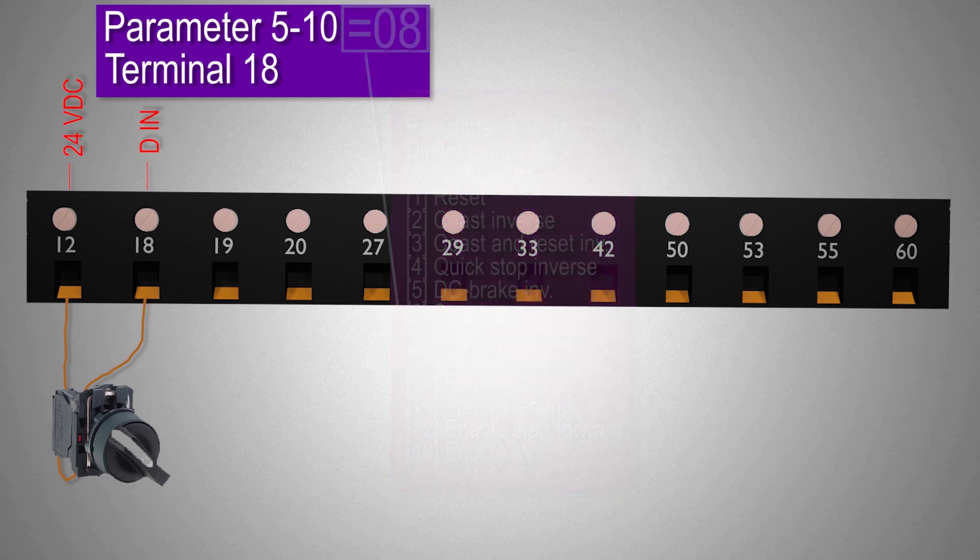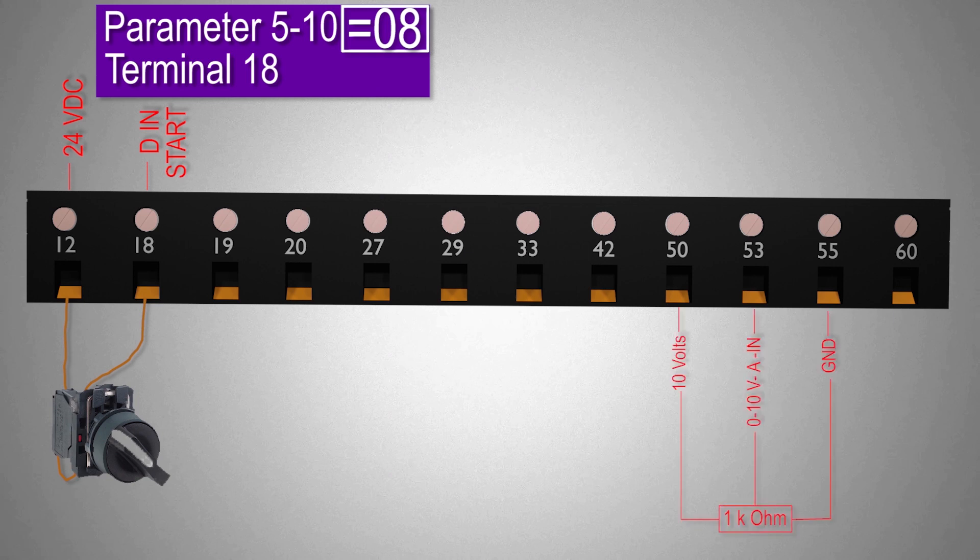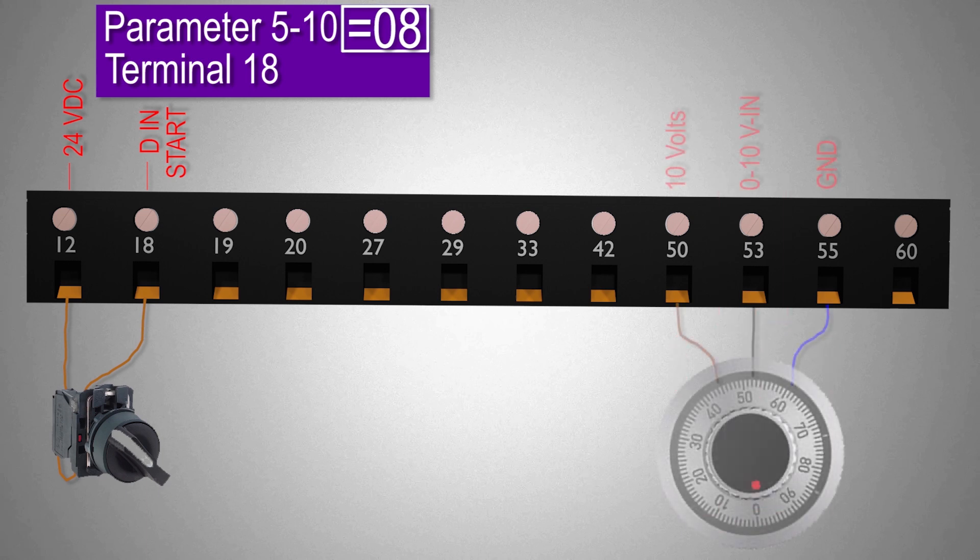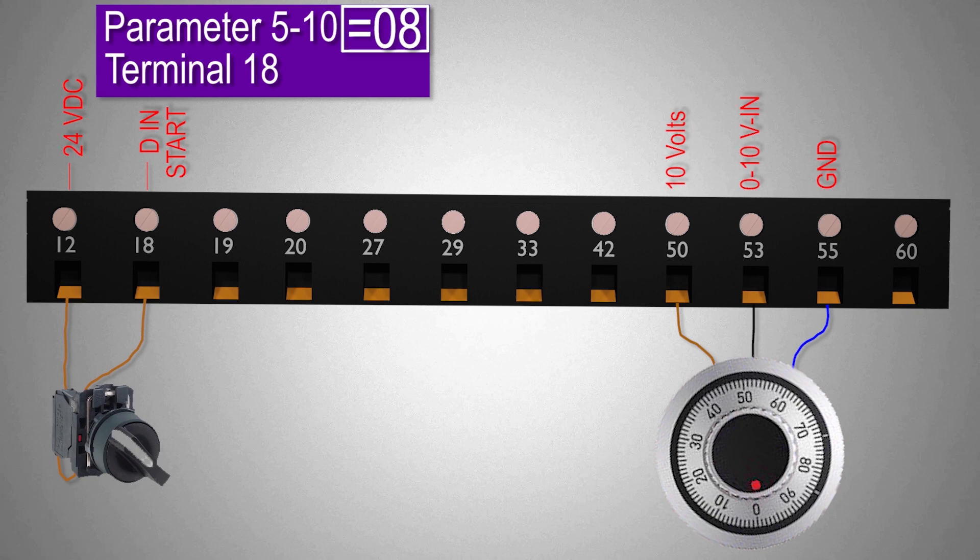Now the next thing is to connect a potentiometer at terminal 53 which is an analog input with 0 to 10 volts signal. We can connect 3 wires of the potentiometer at terminals 50, 53 and 55. Now when VFD is powered on and we rotate the potentiometer it will inject 0 to 10 volts variable signal at analog input terminal 53.